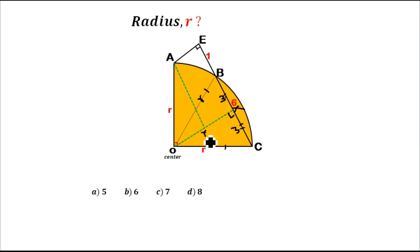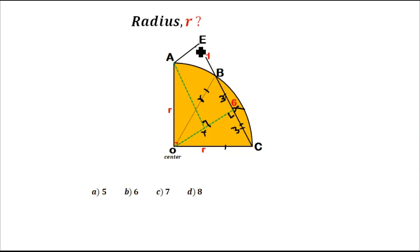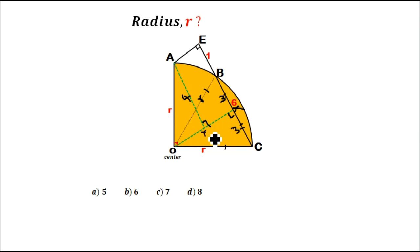Now if you look at this diagram, let this point be X and this point be Y. You can see that diagram AEXY is a rectangle. Since it is a rectangle, the length from O to X — which equals the length from E to X — is going to be 1 plus 3, that is 4. So the length from A to Y will also be 4, as those are lengths of the rectangle.